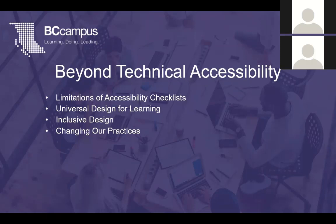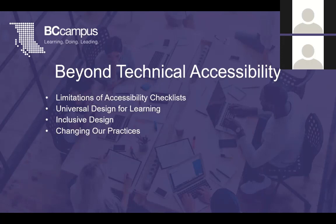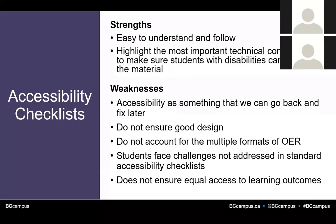Now I want to transition beyond technical accessibility. Up to this point, I've mostly provided a checklist approach to accessibility by giving you a collection of success criteria. These checklist items are concrete and easily actionable, and they make up the very important minimum technical considerations to make sure students with disabilities can access their educational materials. However, a checklist approach to accessibility does have a number of weaknesses.